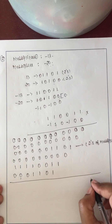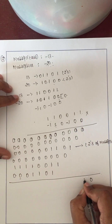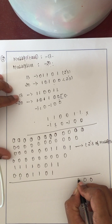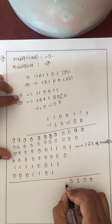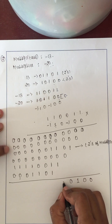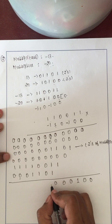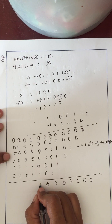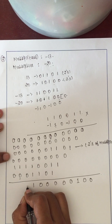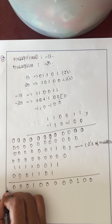Adding all partial products together gives the result 0 0 0 1 0 0 0 1 0 0 0, with a carry of 1 that can be ignored.